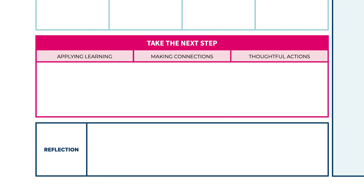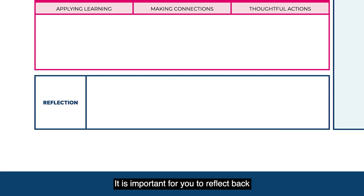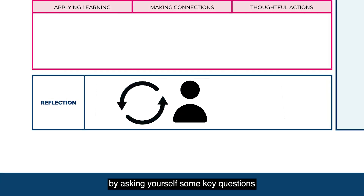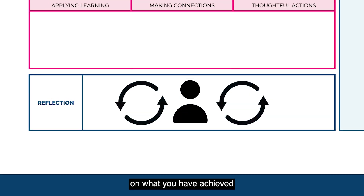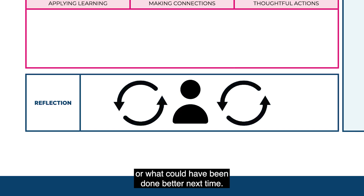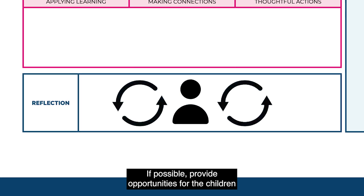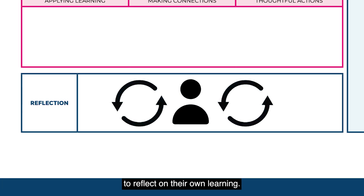Number ten: reflection. It is important for you to reflect back by asking yourself some key questions on what you have achieved or what could have been done better next time. If possible, provide opportunities for the children to reflect on their own learning.